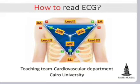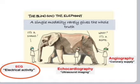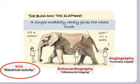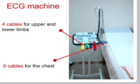How to read an ECG. A 45-year-old male patient presenting to the ER with chest pain. ECG shows electrical activity, echocardiography shows ultrasound images, and angiography shows coronary supply.